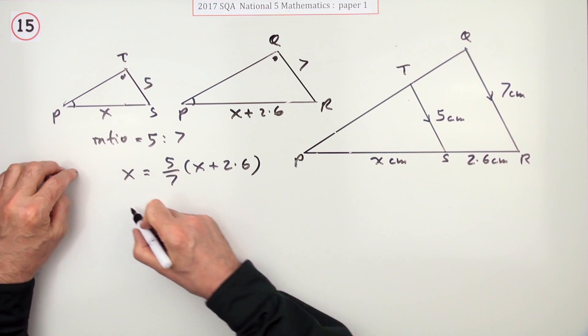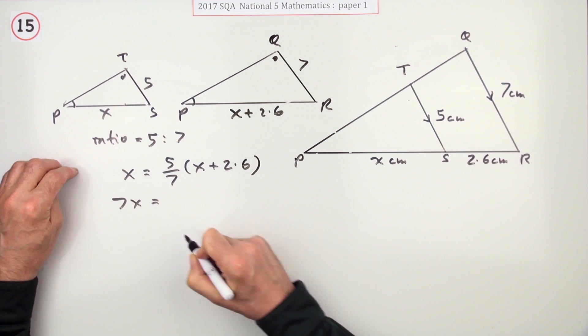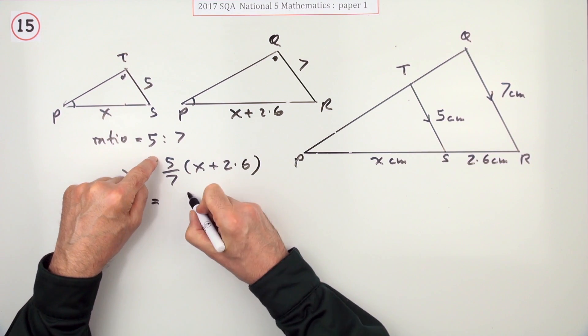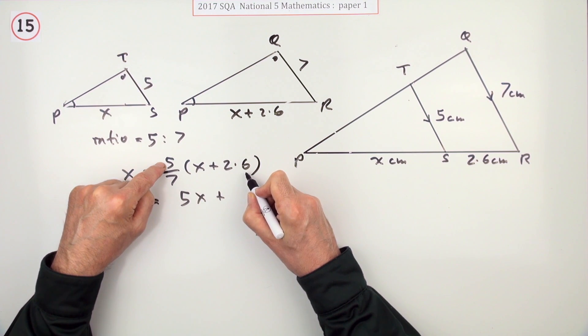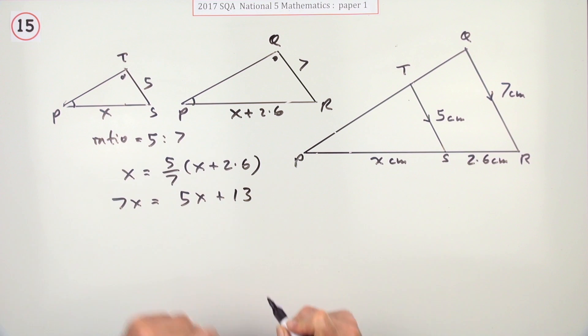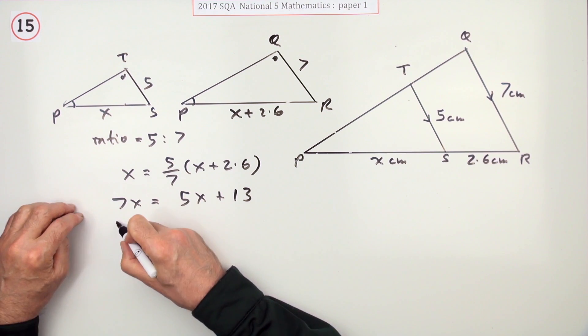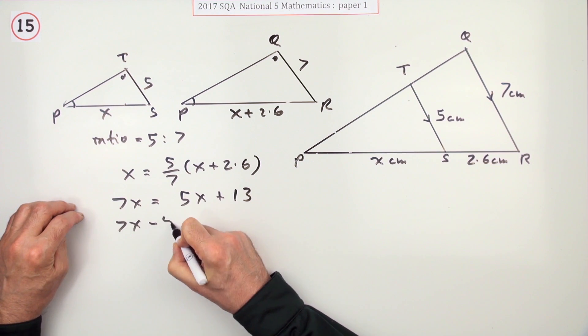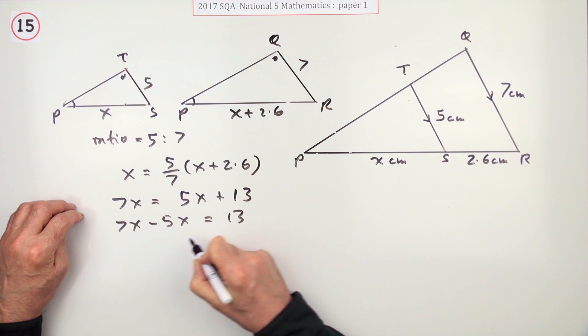Take the 7 across and multiply that side. 7x. Leaving the 5 to multiply this side. 5x plus, now 5 times 2.6. That's 10 and another 3 is 13. Now it's just a case of swap sides. 7x take away the 5x is 13. So 2x is 13.